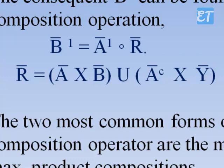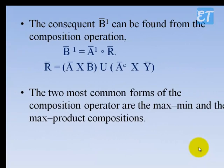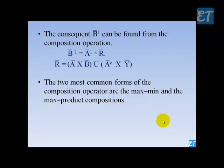So if X is A-bar then Y is B-bar. This relation matrix R-bar is the intelligence we got from Rule 1. R is equal to A cross B, union complement of A cross Y-bar, where Y is the universal set. This is the intelligence from Rule 1.